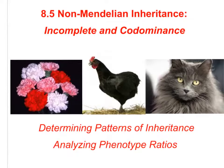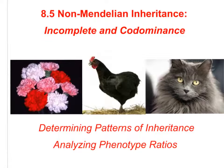Hello and welcome to our next section on genetics. We have been talking so far about Mendelian inheritance and what happens when the inheritance follows a different pattern other than the standard Mendelian pattern. We're going to look at some of those different patterns, specifically called incomplete dominance and codominance, and we're going to analyze those phenotype ratios.